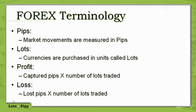Profit is captured in pips times the number of lots traded, and loss is lost pips times the number of lots traded. So if you traded 10 lots at one dollar apiece and you lost 10 pips in the market, you would have lost $100. But you can gain the same $100 on the flip side.